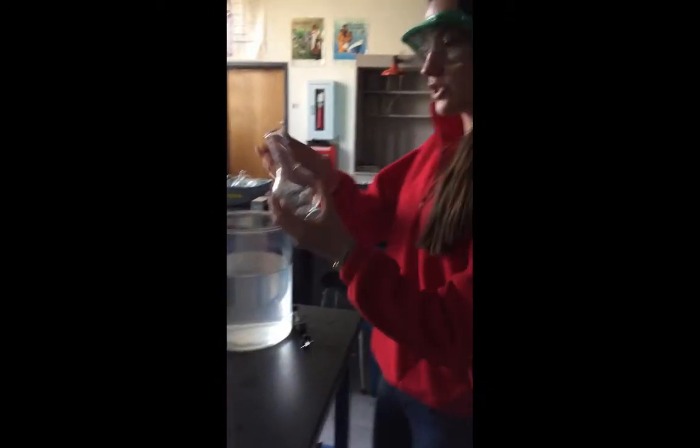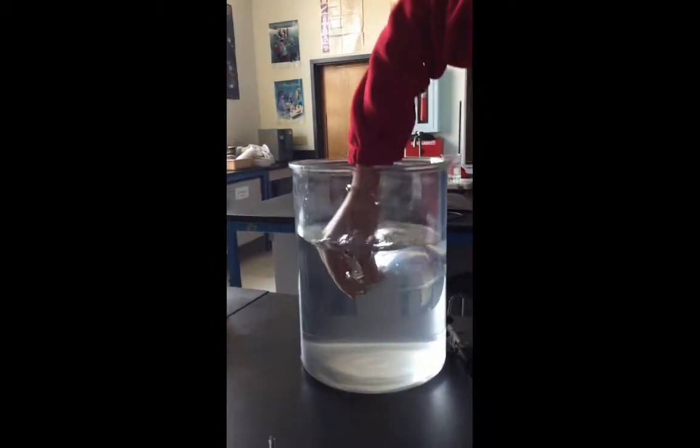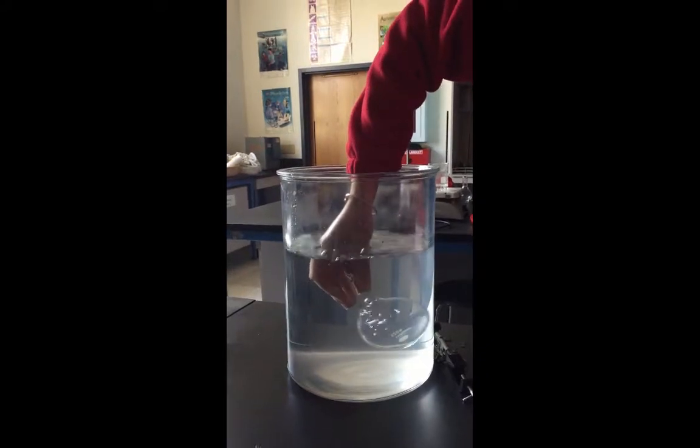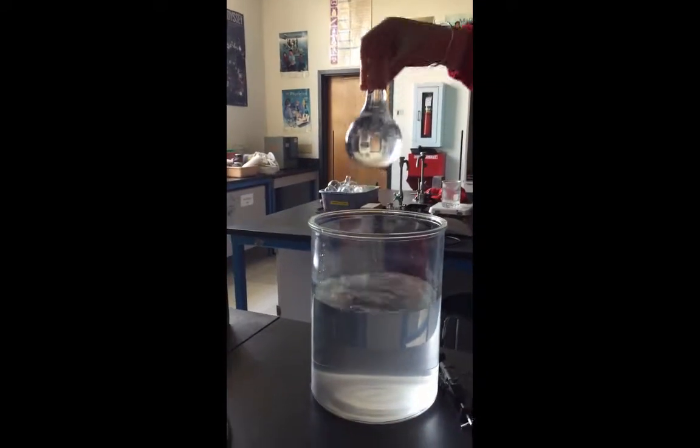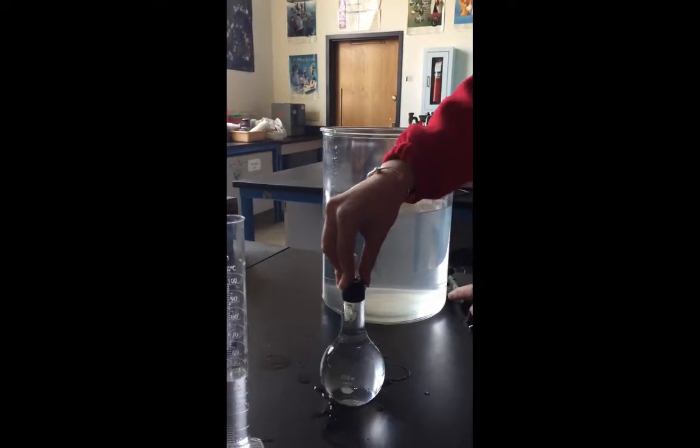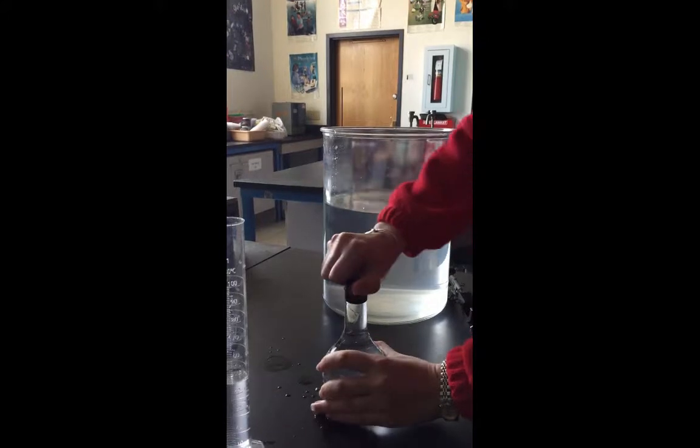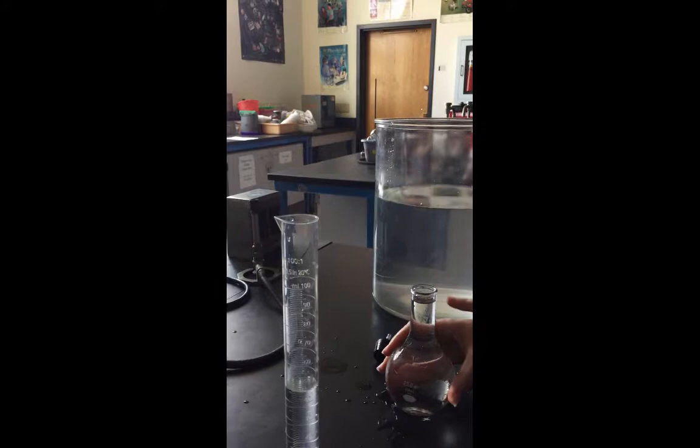Next we're going to figure out the total volume of this flask. I'm just going to fill it up with water. The stopper does displace some of the volume, so we're going to displace that same water. You can see there's a little bit of volume missing.